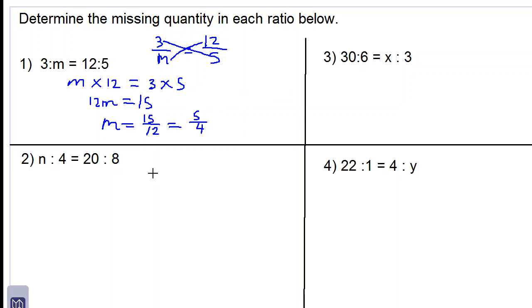Let's move on to number 2. We write this as a fraction: n over 4 is equal to 20 over 8. Multiplying along this line, n multiplied by 8 is equal to 4 times 20. Therefore 8n is equal to 80. So n would be equal to 80 divided by 8, which is 10.